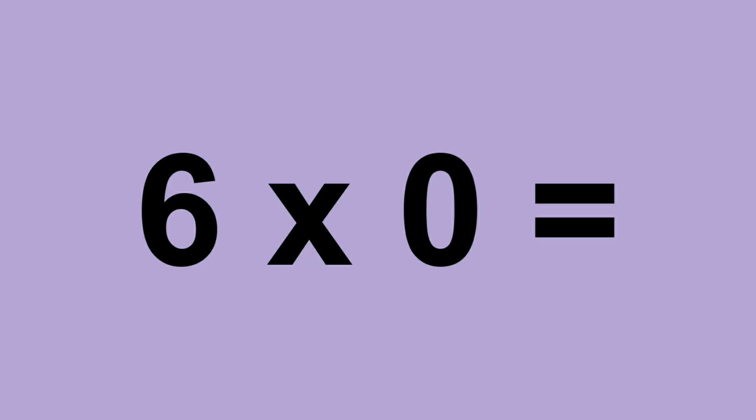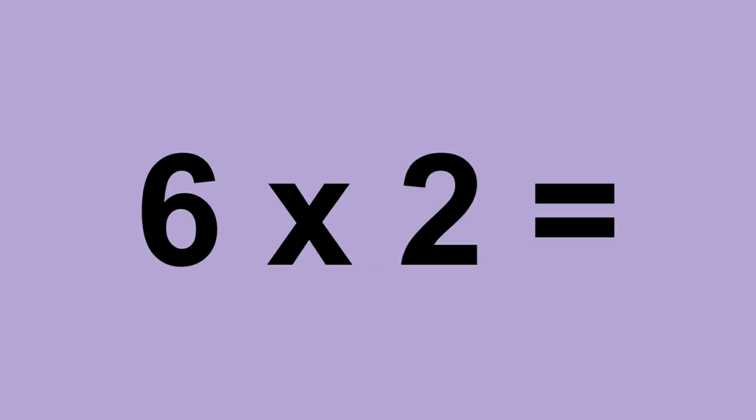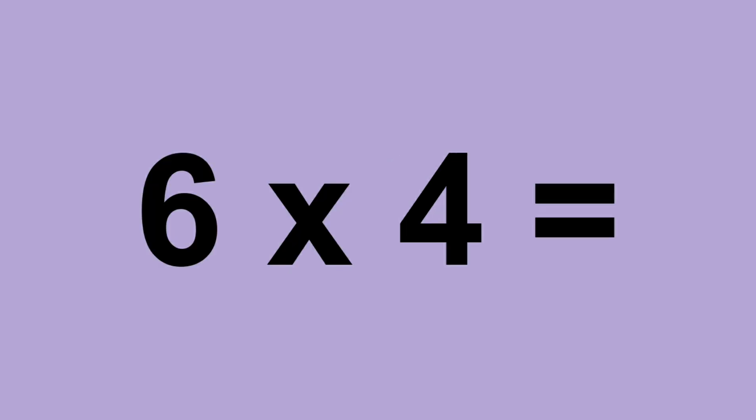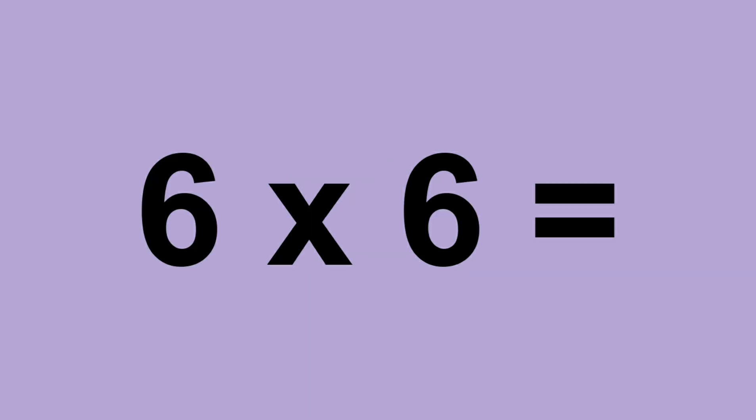Six times zero equals zero. Six times one equals six. Six times two equals twelve. Six times three equals eighteen. Six times four equals twenty-four. Six times five equals thirty.